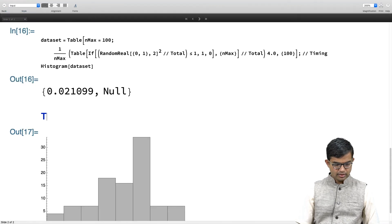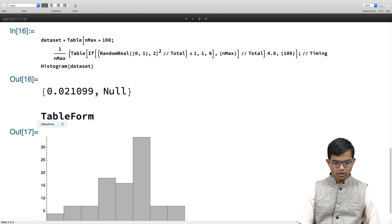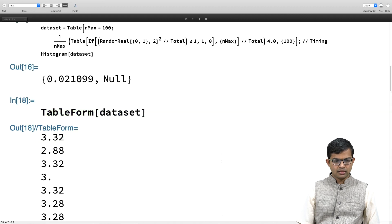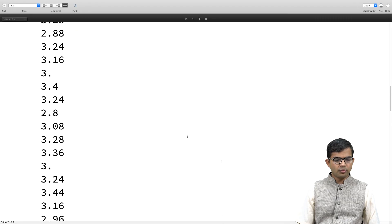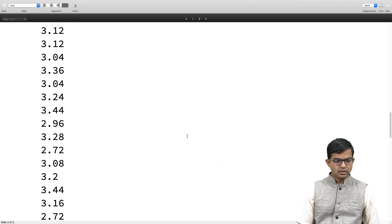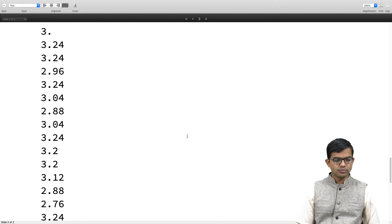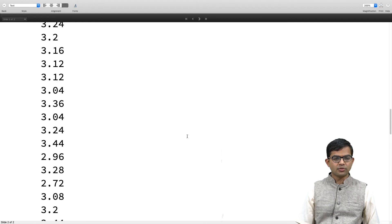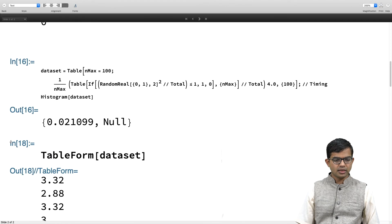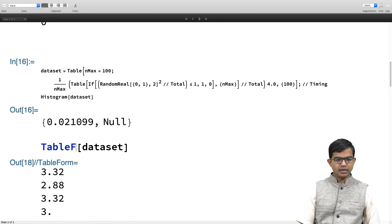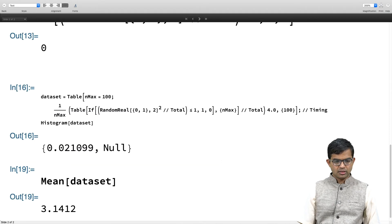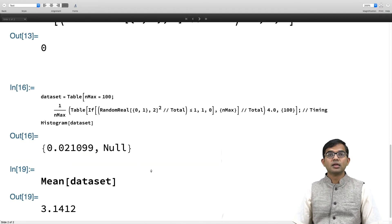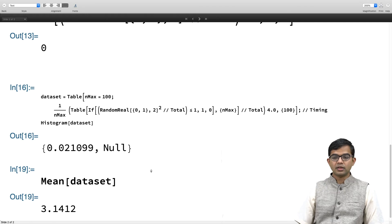There you see, you got a whole bunch of numbers which are all in the ballpark of 3.14. I can simply take an average of all this. Let me just take a mean of this. Instead of table form, let me take the mean of this. And mean is indeed very close to the value of pi that we already know.